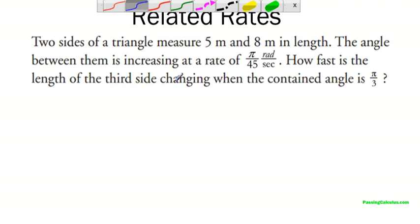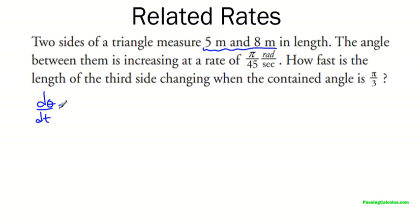When we're doing these questions, you want to look at what's fixed and what's changing. These two sides of the triangle are what's fixed. I can sub in those things right into my formula right away. But if something's changing, we need to be able to take the derivative of it. The rate of something is changing. So the angle between them, that's increasing at a rate. So we got the rate of change of the angle. So d theta over dt is pi over 45 rad per second. And we're looking for how fast is the length of the third side changing.